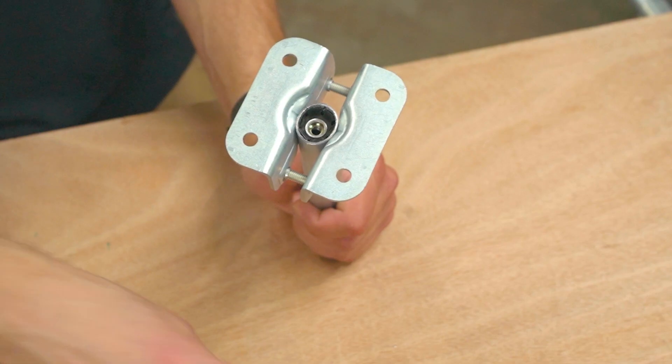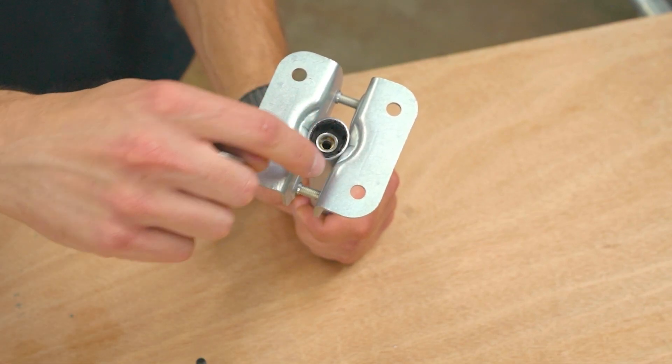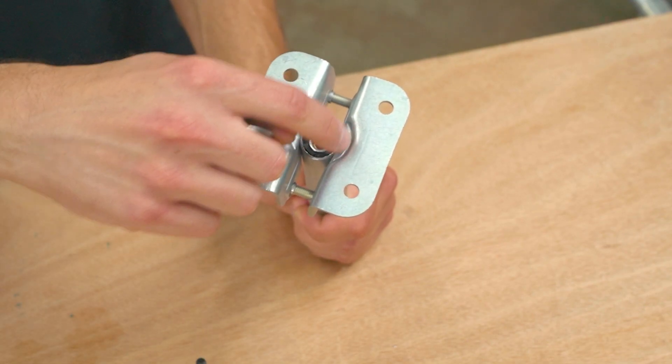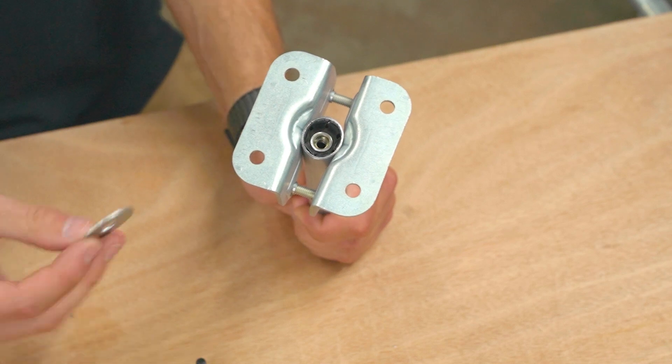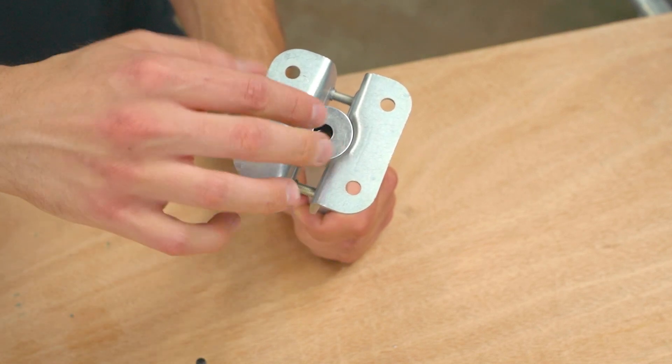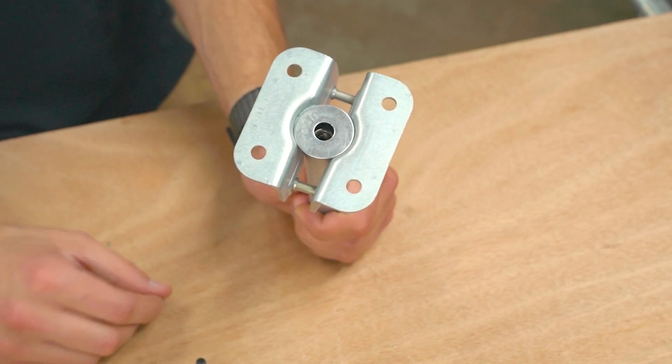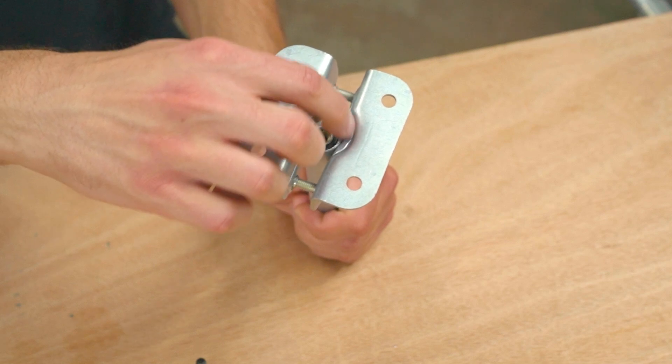But we're going to use that in combination with this indention that is built into the flange pieces down here. And that indention is made specifically for a fender washer to fit in there nicely like this. And the fender washer is going to catch on that lip there.